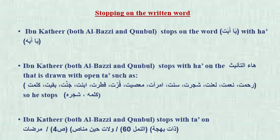Ibn Kathir, boss Al-Bazli and An-Kombol, stops with ها on ها التأنيث that is drawn with open ta', such as رحمة، نعمة، لعنة، شجرة — all words drawn with open ta'. He stops with ها, so he says كلمة شجره. When stopping, he says سليمة شجره.